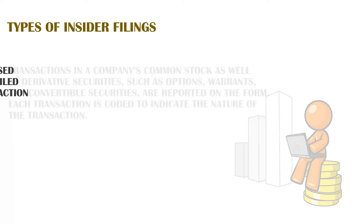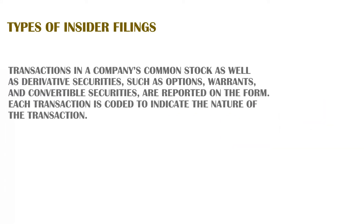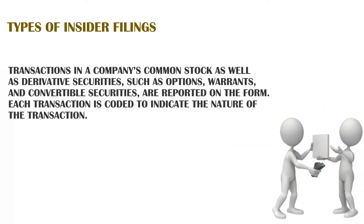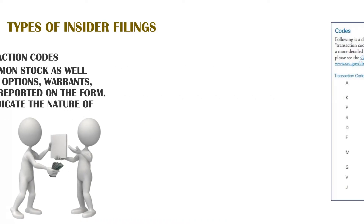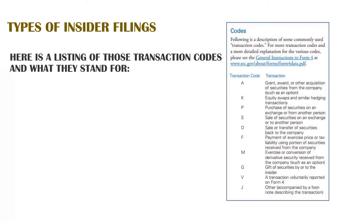Transactions in a company's common stock, as well as derivative securities such as options, warrants, and convertible securities, are reported on this form. Each transaction is coded to indicate the nature of the transaction. Here is a listing of those transaction codes and what they stand for.